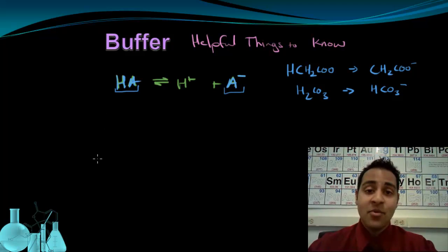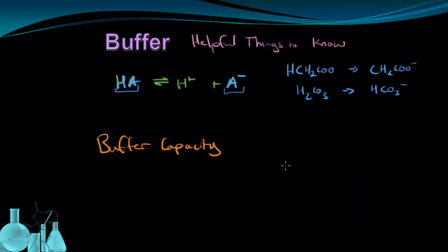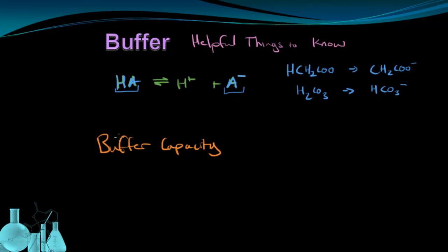The second thing that's important about buffers is that they have a limit. They have a capacity. It's called buffer capacity. And the buffer capacity basically refers to how much acid or base the buffer can absorb and still resist the change in pH. Because eventually if one of these things is used up, if the weak acid is all used up neutralizing a base, or the conjugate base is all used up neutralizing a strong acid, then it won't be able to prevent that change in pH anymore. So the buffer capacity is how much the buffer can absorb and still resist the change in pH.